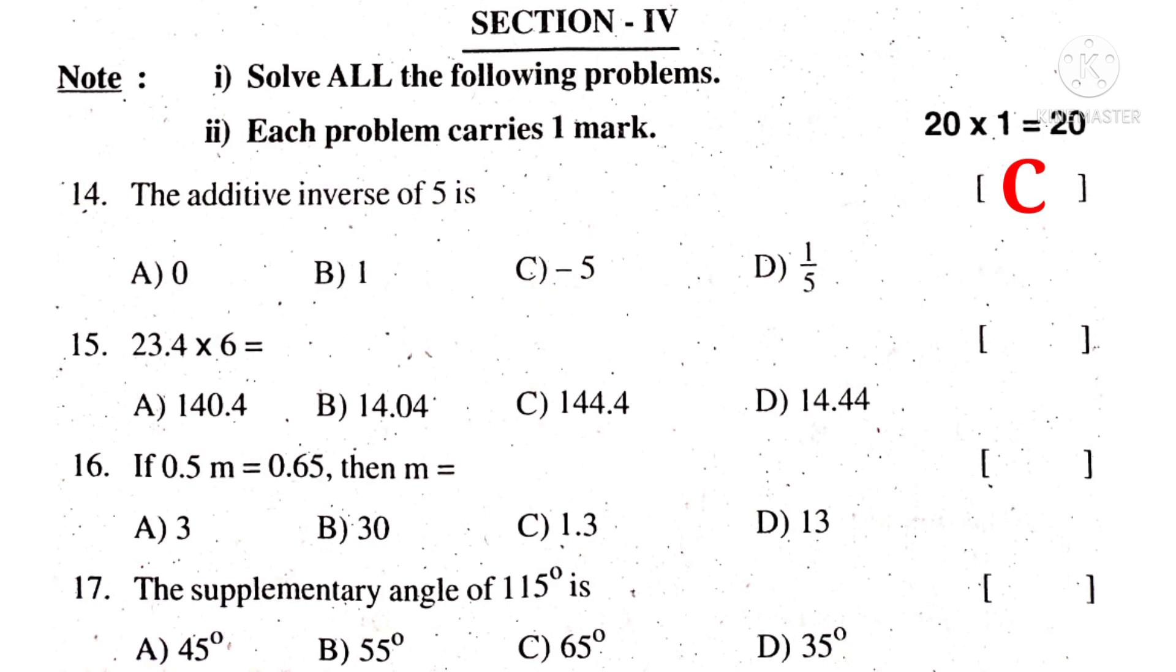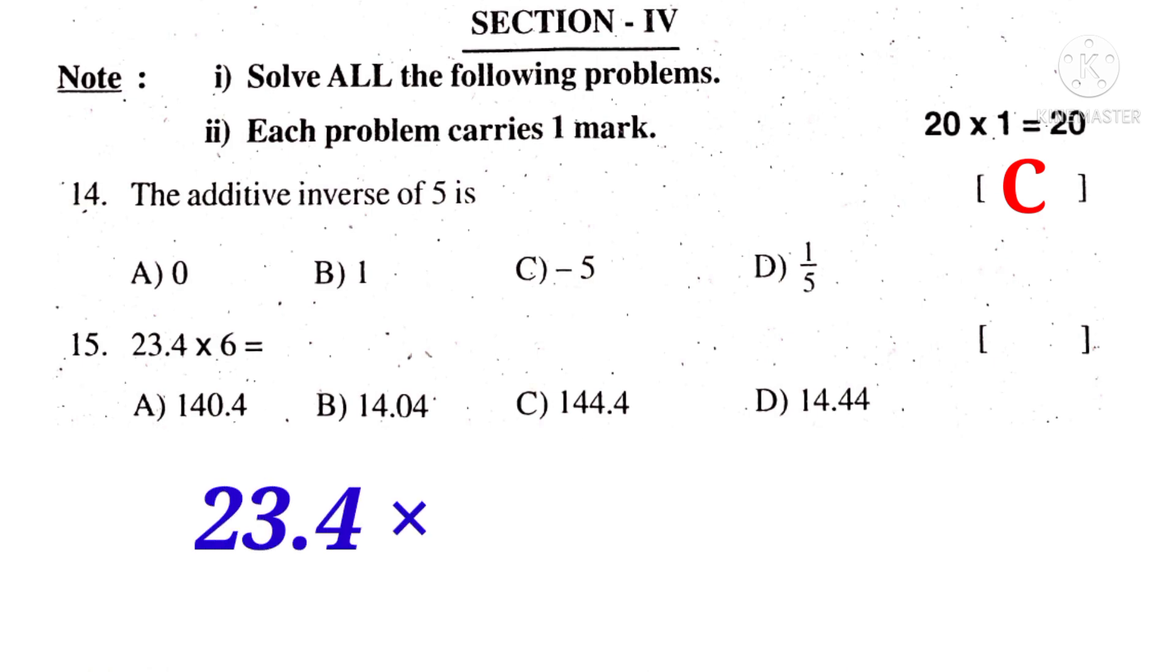Now 15. 23.4 into 6 equal to, multiply 23.4 into 6, we get 1404. Observe that there is only one decimal place in the multiplicand. So we have to put a decimal point counting from right to left after one digit, that is 140.4. So the correct choice is A.